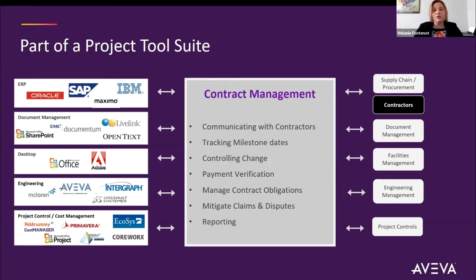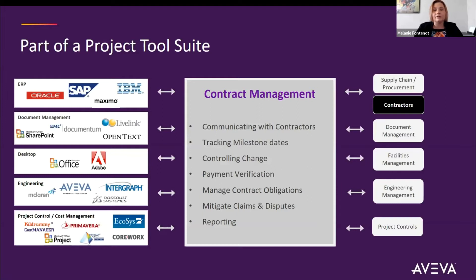If you look at that middle gray box, those are all the tasks absolutely necessary within contract management: communicating, tracking milestone dates, controlling change, reporting the pipeline, payment verification, making sure obligations don't fall through the cracks, and managing claims and disputes — even if lawyers get involved years later. Contract managers are also responsible for their own internal reporting, and most of those are makeshift reports. On the right-hand side, all of these disciplines can have a role, work inside the system, be a reviewer, or have visual access.